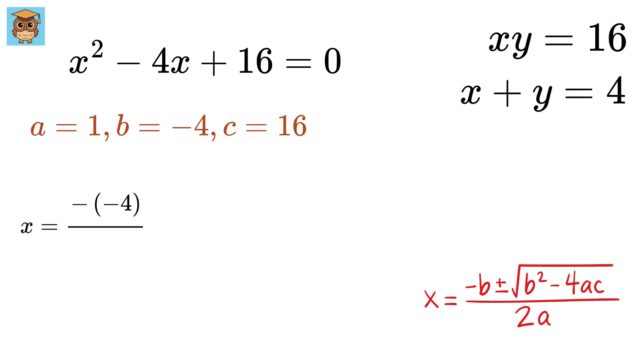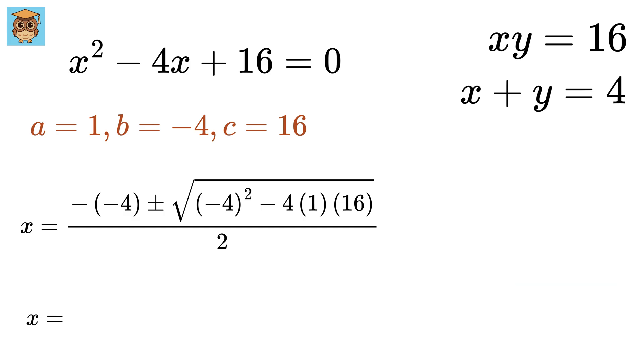So, x equals minus of minus 4, plus minus of minus 4, square minus 4, times 1 times 16 whole, divide by 2. This gives x equals 4 plus minus under root of this becomes 16 minus 64, or minus 48 whole upon 2.